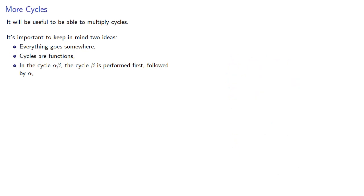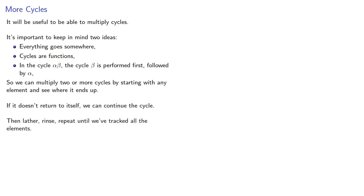So we can multiply two or more cycles by starting with any element and see where it ends up. If it doesn't return to itself, we can continue the cycle, then lather, rinse, repeat, until we've tracked all the elements.